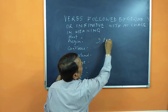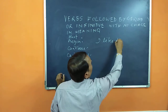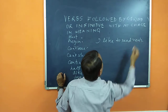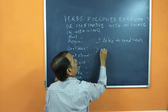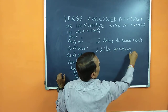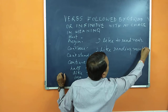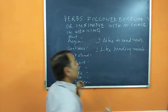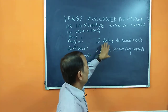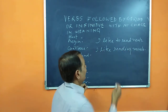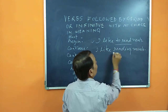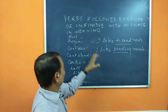For example, take the word 'like.' I like to read novels — here you are using the infinitive. Or: I like reading novels — here you are using the gerund. There will be no mistake either way. Both sentences are correct.